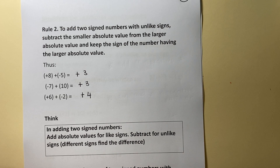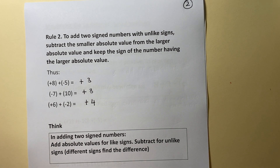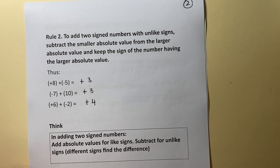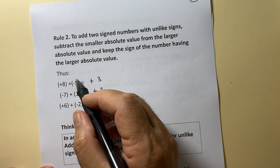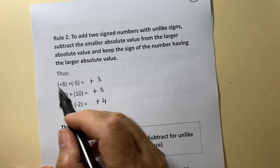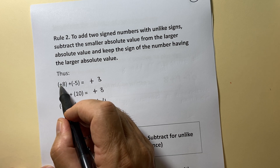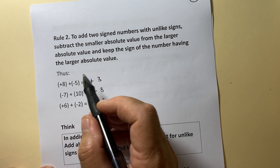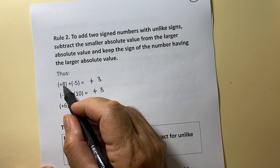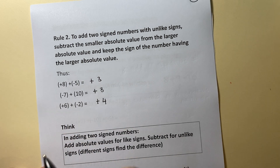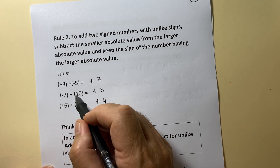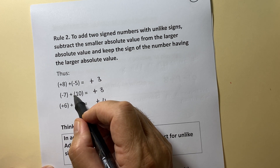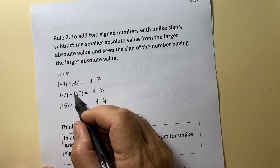Rule number 2: to add two signed numbers with unlike signs, subtract the smaller absolute value from the larger absolute value and keep the sign of the number having the larger absolute value. So, positive 8 add negative 5 — signs are different. Keep the sign of the larger number, which is plus, and subtract: 8 minus 5 equals 3. Negative 7 add 10 — 10 has a positive sign in front but we don't write it. Keep the sign of the larger number, which is plus.